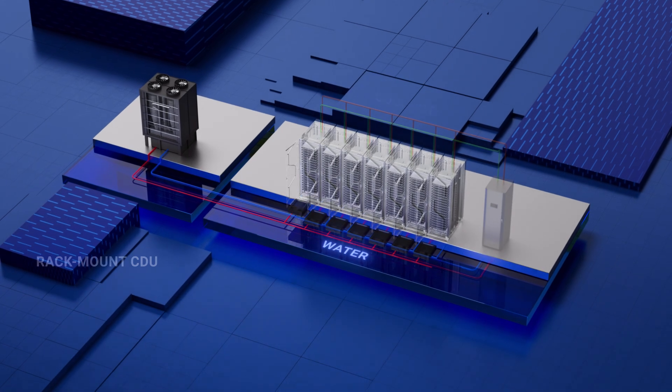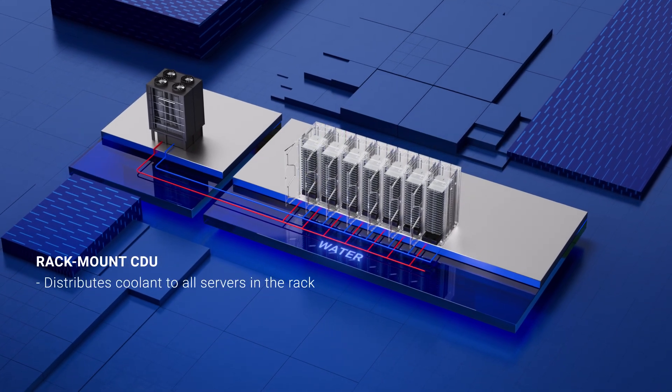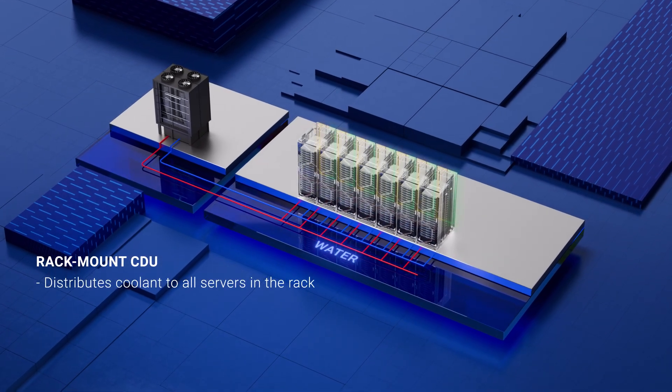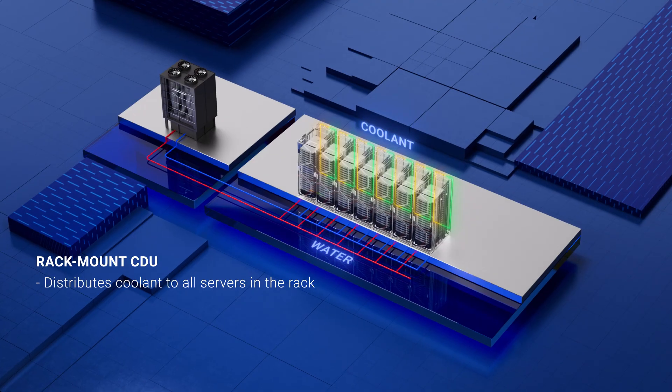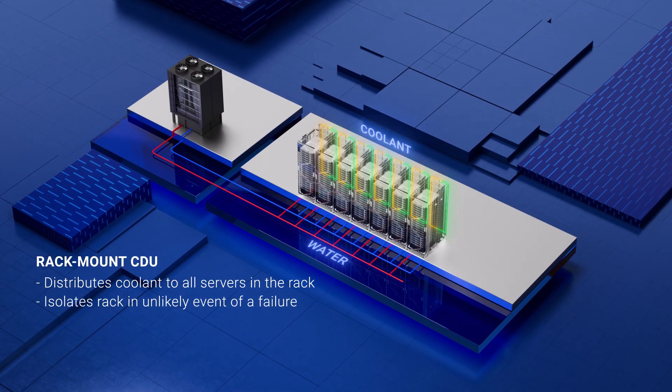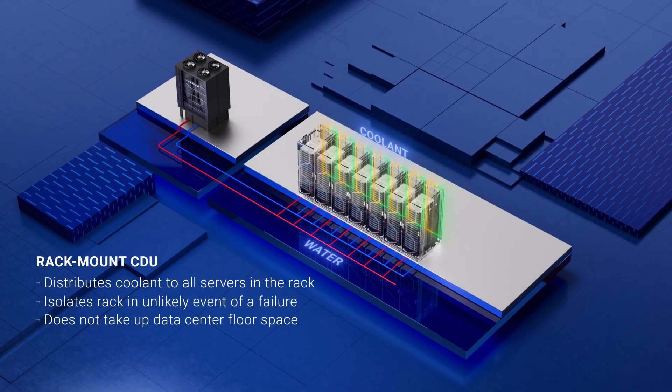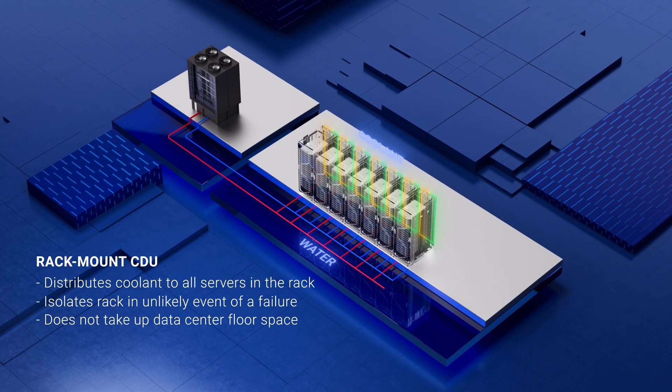A rack mount CDU distributes coolant to all servers in that rack. While they take up space in the rack, rack mount CDUs reduce the amount of compute infrastructure impacted in the unlikely event of a failure. And these are only the building blocks of a liquid cooling environment.